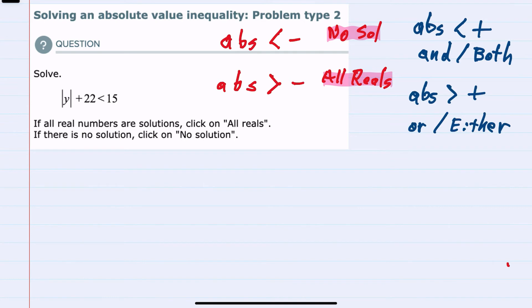Lastly, we could have the absolute value greater than a positive. This would be an or solution, meaning that either of our two solutions would be satisfactory.